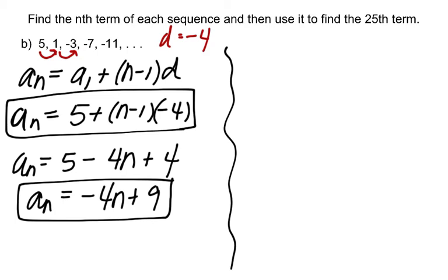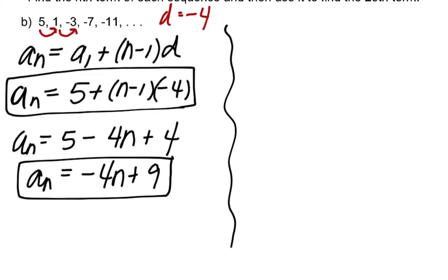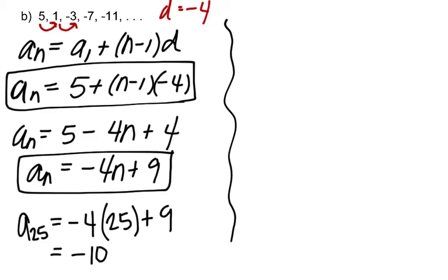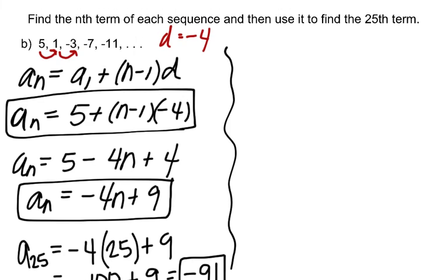We need to find the 25th term, which means finding a sub 25 — just substitute in n equals 25. Negative 4 times 25 is negative 100, and adding 9 gives us negative 91. So the 25th term of this sequence is negative 91. This is not a formula you have to memorize — you can do all arithmetic sequences without it.